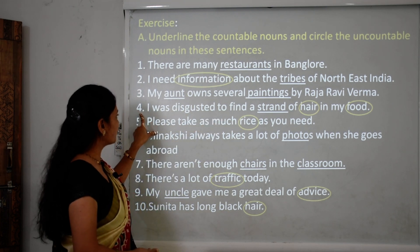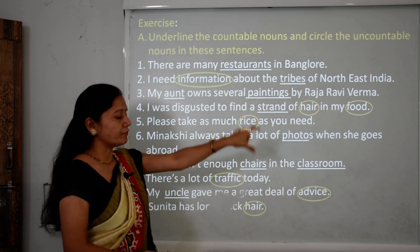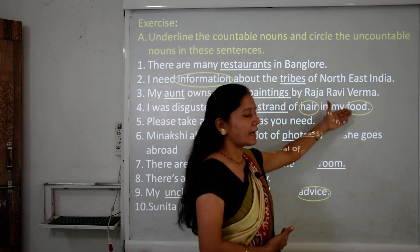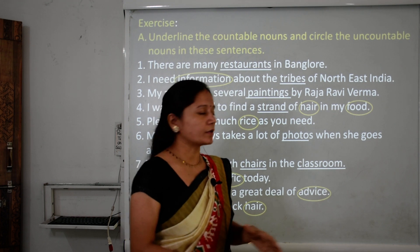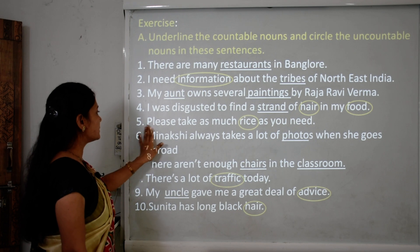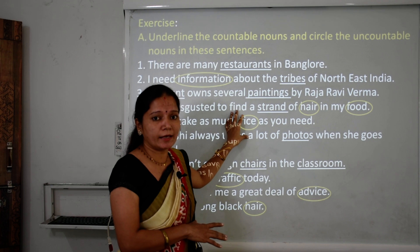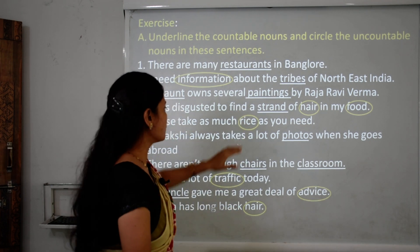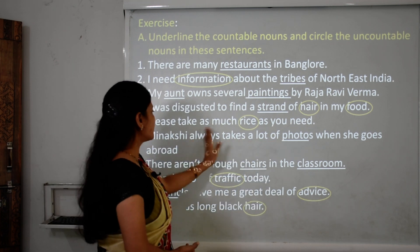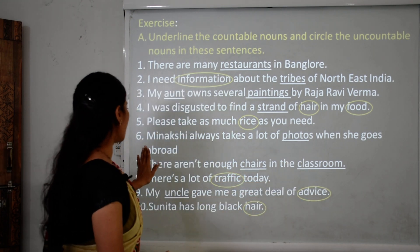Sentence 4: 'I was disgusted to find a strand of hair in my food.' Strand is a countable noun. Hair and food are both uncountable nouns, so I circled them. Sentence 5: 'Please take as much rice as you need.' Rice is uncountable, so I circled it. Sentence 6: 'Meenakshi always takes a lot of photos when she goes abroad.' Photos is a countable noun.